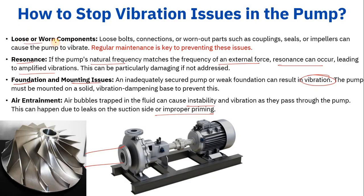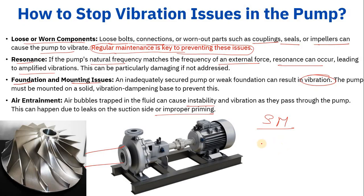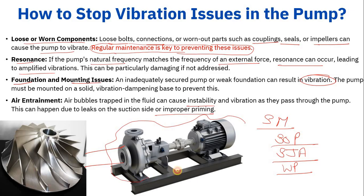Loose bolts, loose connections, and worn-out parts such as coupling seals and impellers can also cause the pump to vibrate. Regular maintenance is key to preventing these issues. For rotating equipment, always follow the SOP and the SJA or work procedure. Whenever you notice something unusual with rotating equipment or the associated lines, inform the DCS operator, your senior, or the shift in charge so they can address the issue.